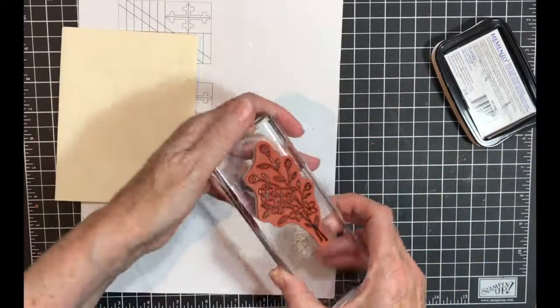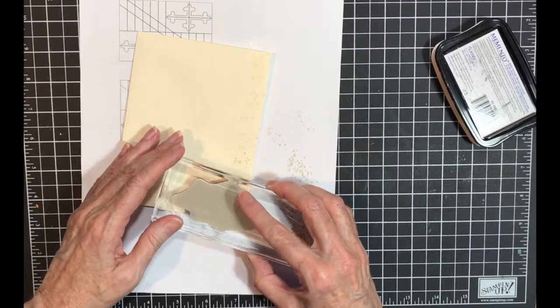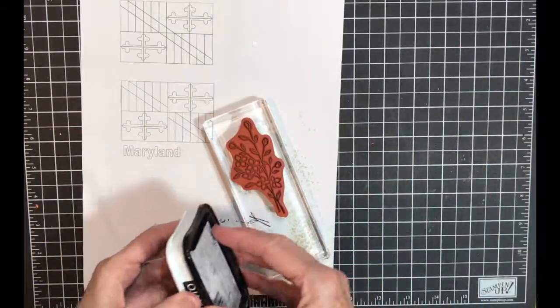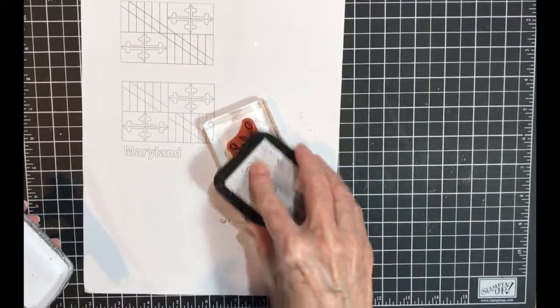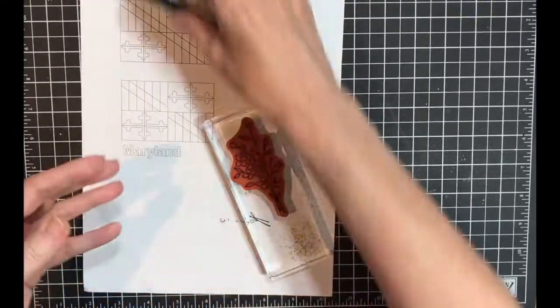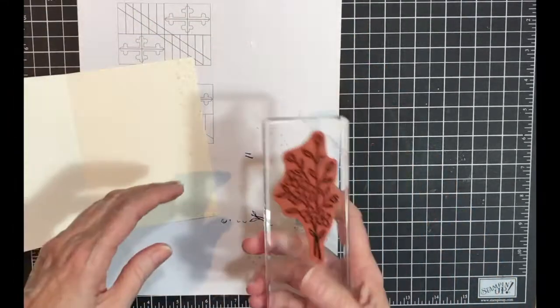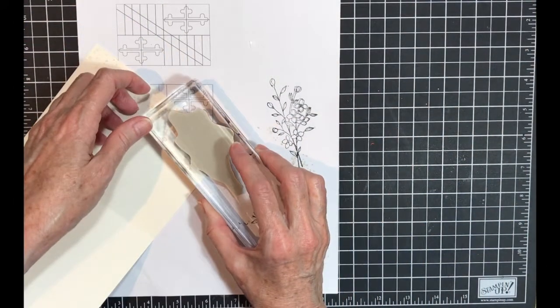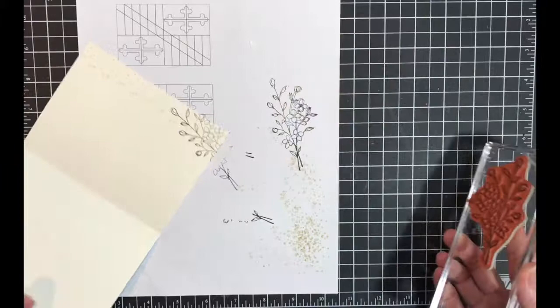And I'm going to do the same with the edge of my card, but I'm going to off-stamp it because I don't want it real dark since it's the inside. Okay, everything's stamped.